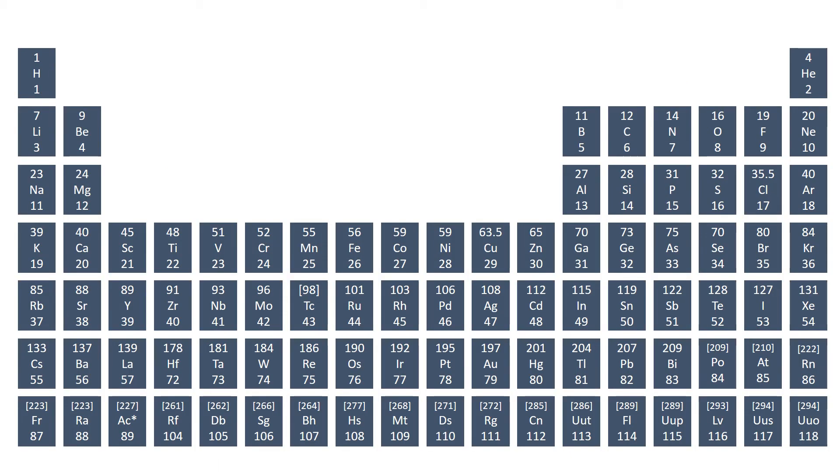In your exam, you'll be supplied with a periodic table, and you should be able to use the names and symbols of the first 20 elements in the periodic table, the elements in group 1 and group 7, and any other elements that are mentioned in the specification.